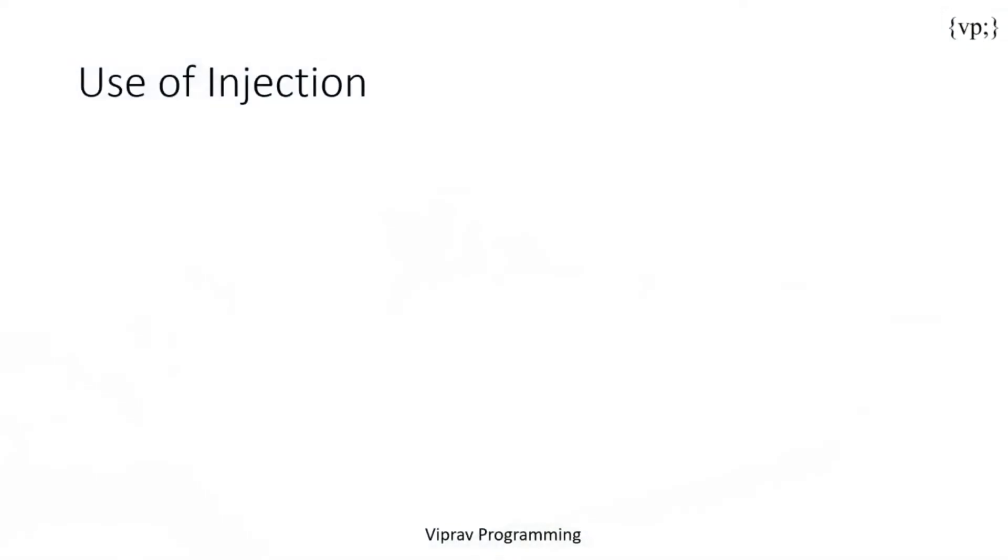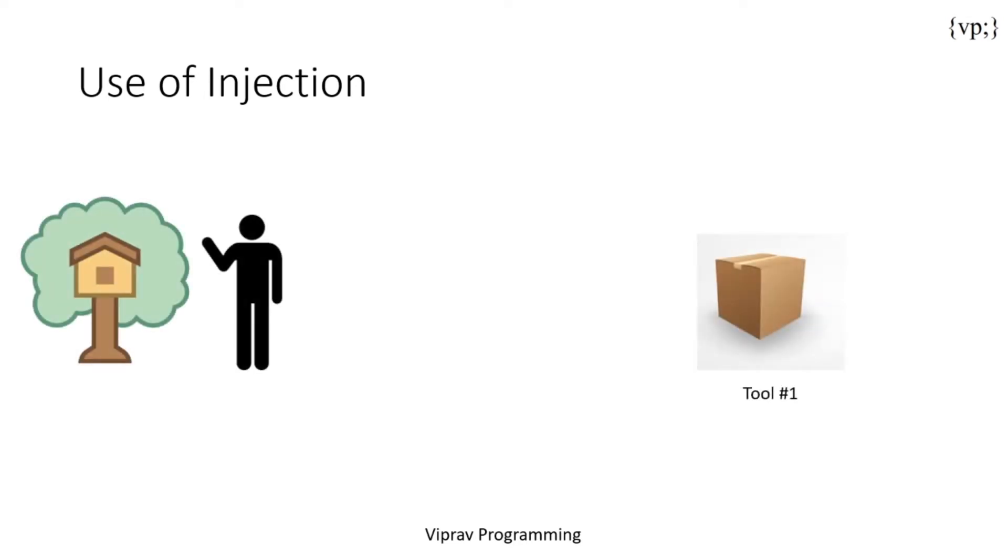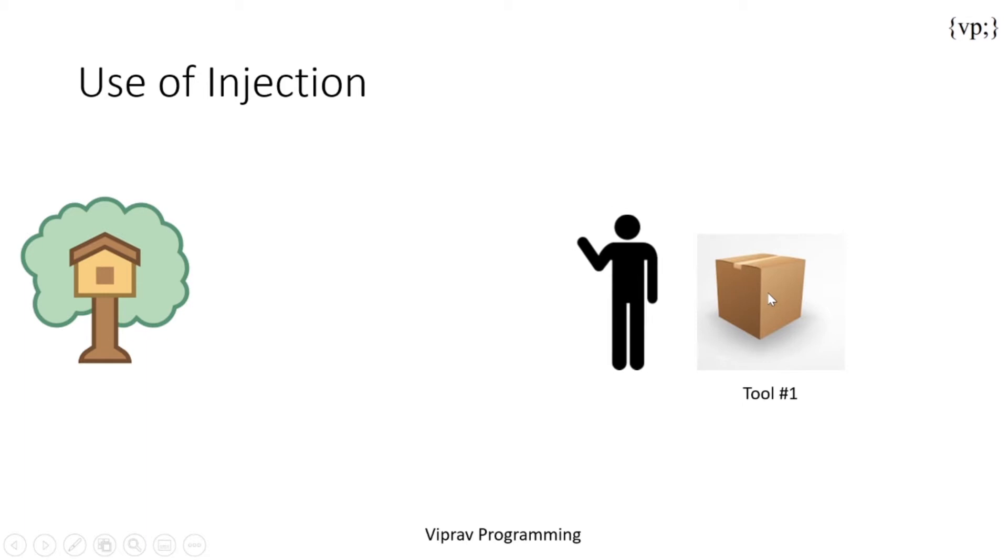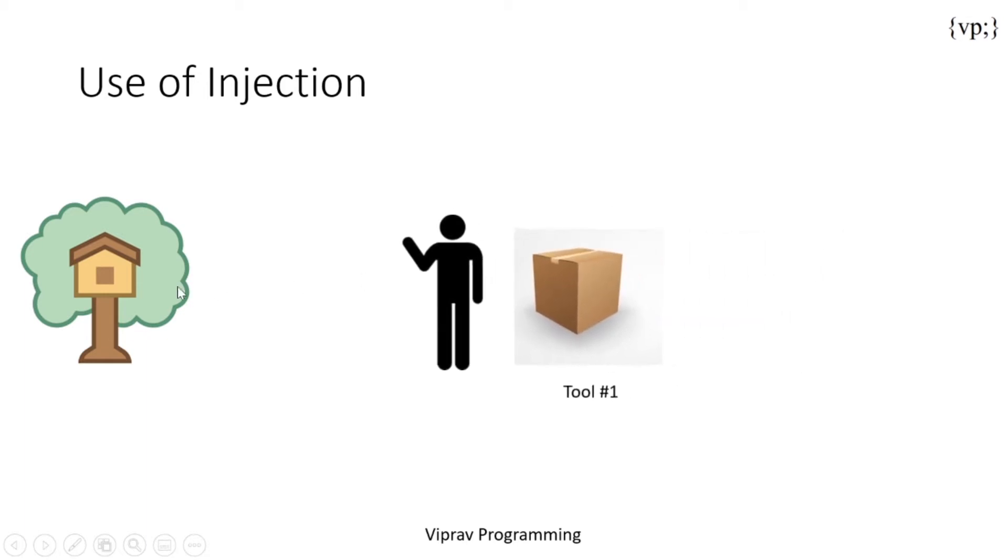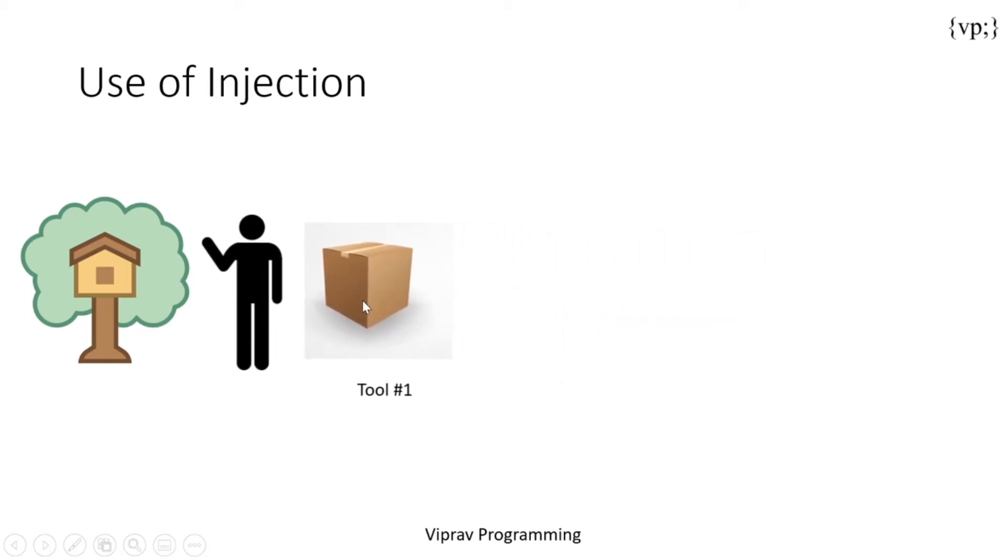Now let's take a look at one example of using injection to decouple your implementations from the dependencies. Let's say you have you and you want to build your treehouse. You have a few tools over here and you want to go and get it. So let's go get the tool and you have to move it all the way back to your treehouse. And of course to get the tool inside, you want to open it up and then you can use the tool.